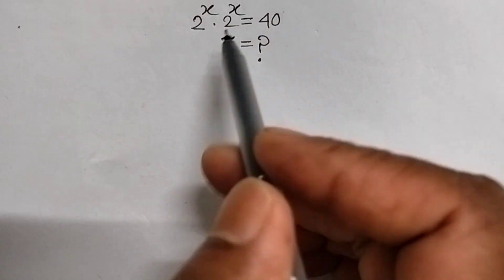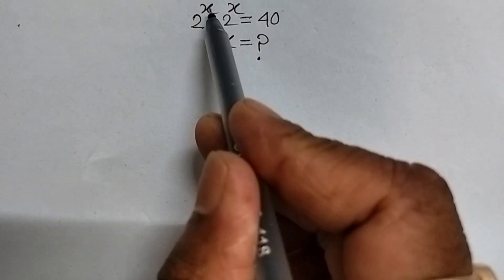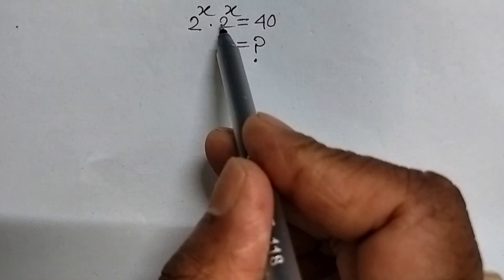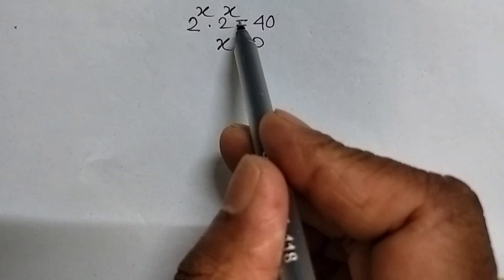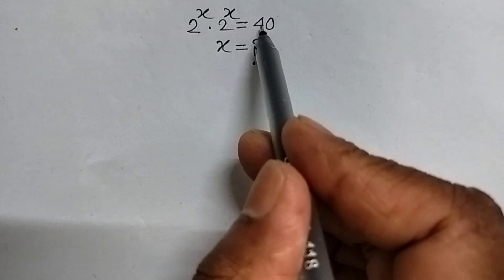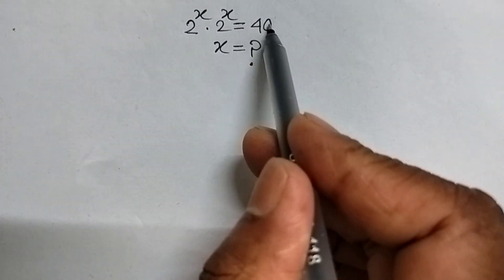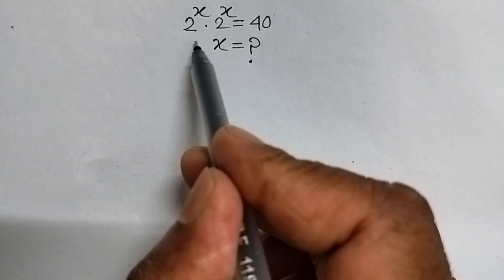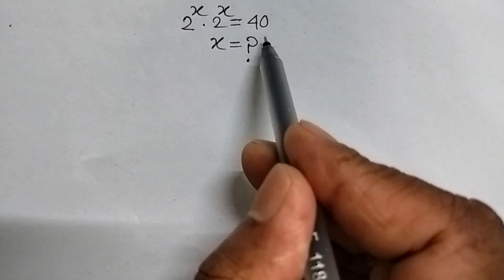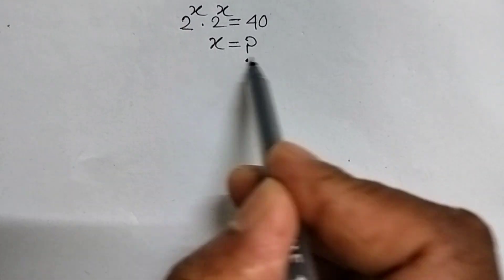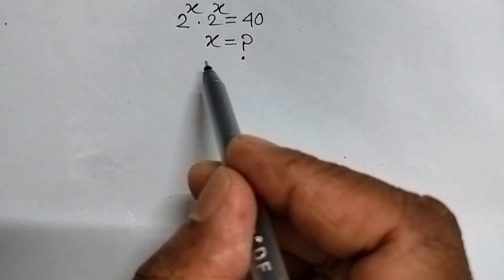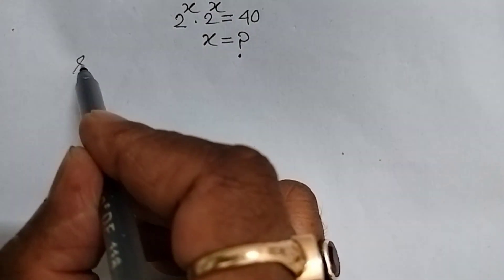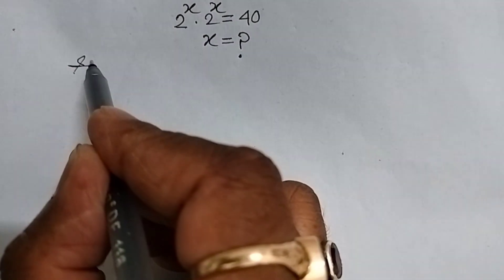Today, we are going to solve the problem 2 power x times 2 power x equal to 40. This is our question. We will have to find the value of x. It is very easy. Let's see the solution.